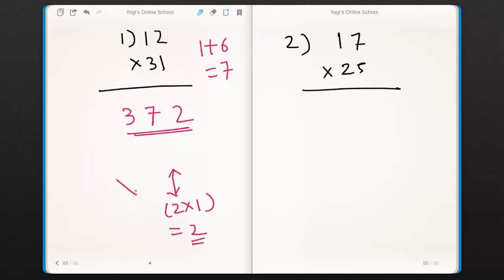Second, we did cross multiplication, that is 1×1 plus 3×2. Its addition gives us 7 and it's our middle digit. And finally we multiplied the first digits of both numbers, that is 1×3. Answer is 3. Therefore our final answer is 372.